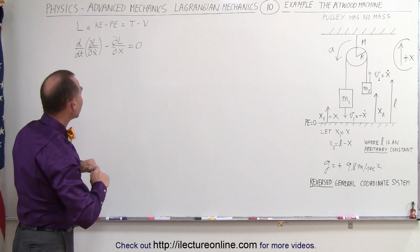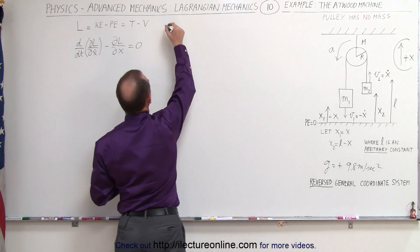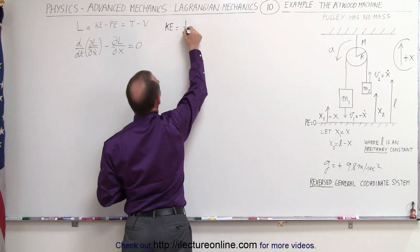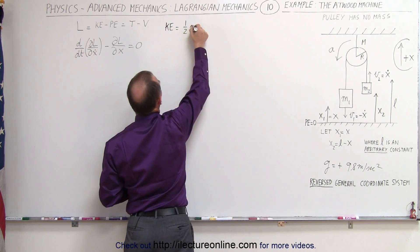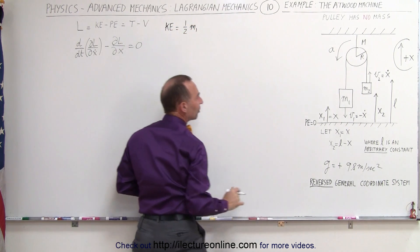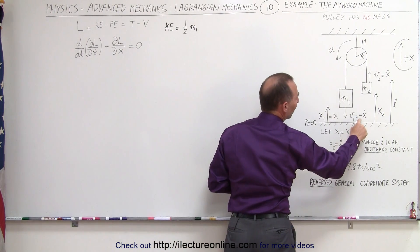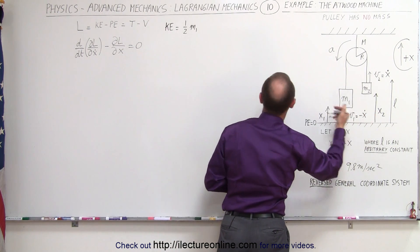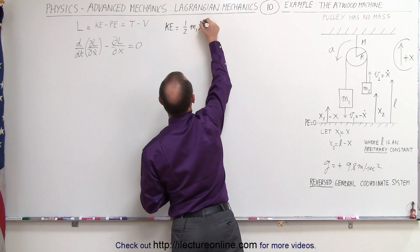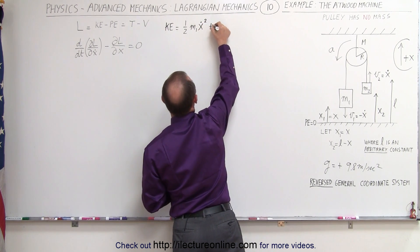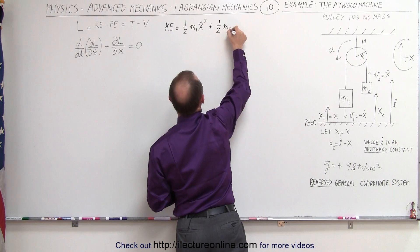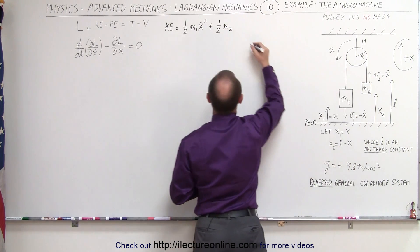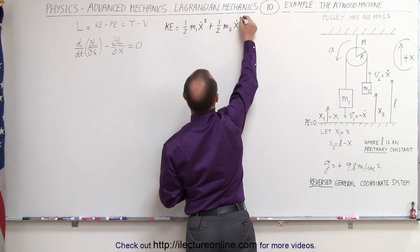Let's find the kinetic energy of our system. The kinetic energy is equal to one-half m1 times its velocity squared. Notice that its velocity will be a negative x-dot, but since we square it, it simply becomes x-dot squared, plus one-half times m2 times its velocity squared, which is a positive x-dot, so x-dot squared.